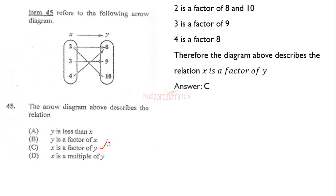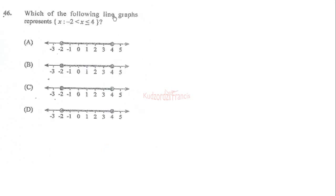Item 46 asks which line graph represents the given inequality. Because there is no equal sign on one boundary, that boundary is open. Where there is an equality, the boundary is closed. So the graph is closed at 4 and open at negative 2. Therefore the correct answer is the corresponding option.